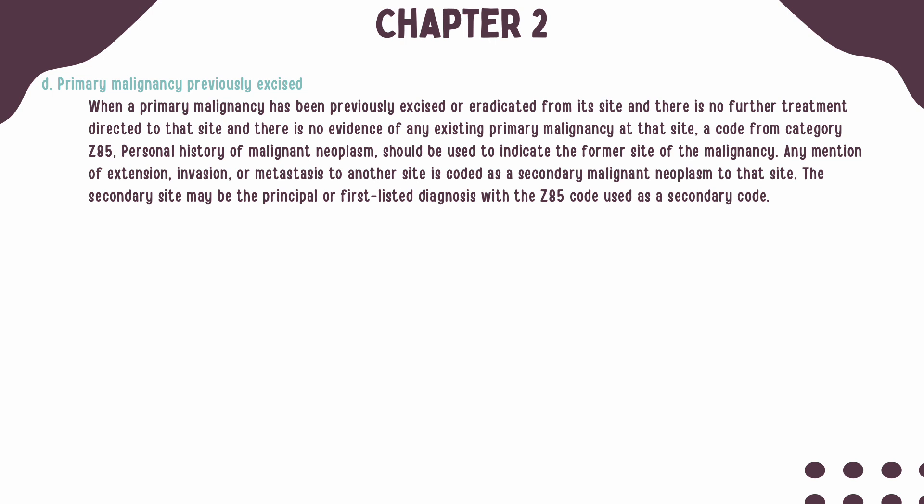When a malignancy has been removed from its site and there is no further treatment directed at the site of the malignancy as well as no further evidence of the malignancy, it will be coded as a personal history of the malignant neoplasm. If a breast malignancy has been excised but continues chemo, immuno, or radiotherapy, it will still be coded as a current neoplasm. Once treatment has been completed, it can be coded as a personal history of the neoplasm. If there is any mention that the malignancy has spread to another site, it will be coded as a secondary malignancy to the new site. If a secondary malignancy is present, it will be listed first, then followed by the history code from category Z85 listed second.